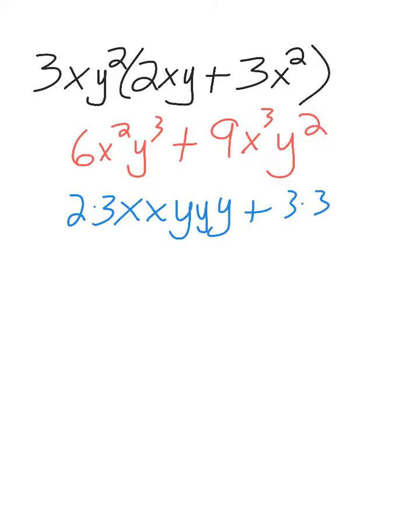So I have 3 times 3, 3x's, 2y's. Now I'm going to circle what's in common for both. So I have a 3. I have 2x's, and I have 2y's.